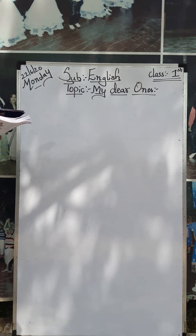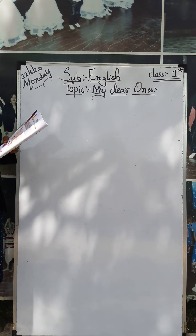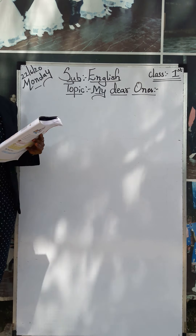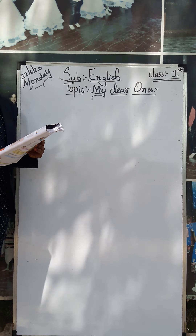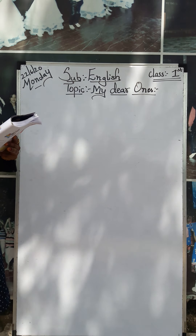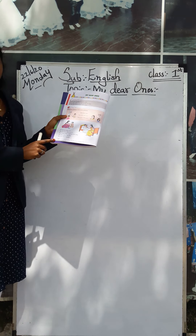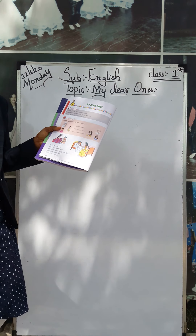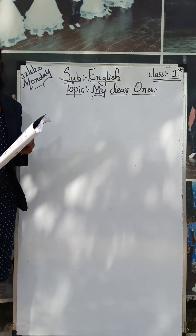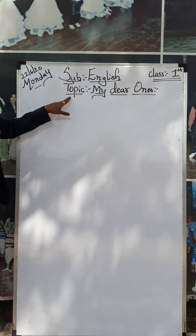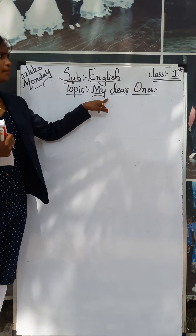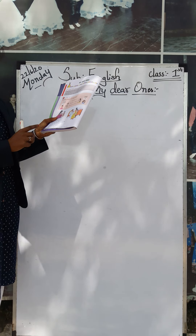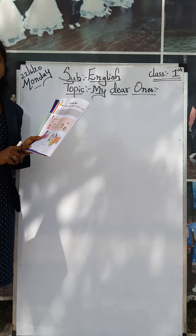Take Term 1, page number 6. Ready children? Take your Term 1 book, page number 6. My dear ones — see, the chapter name is 'My Dear Ones.' Term 1, page number 6. Ready children?